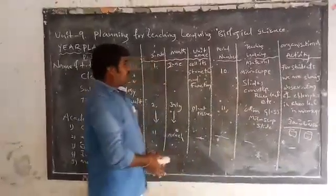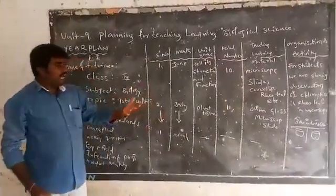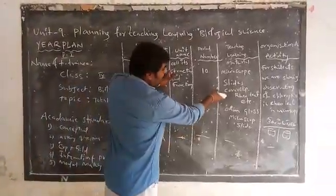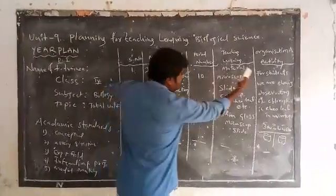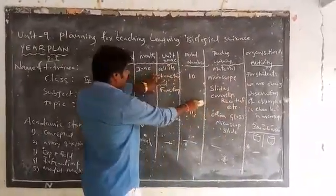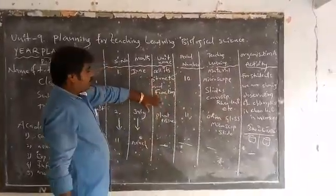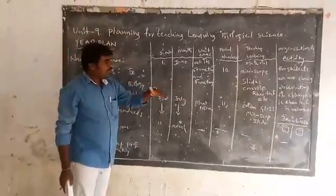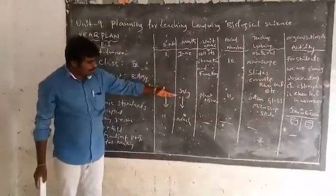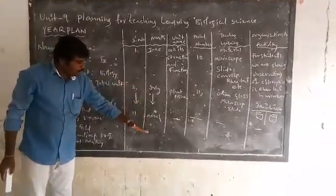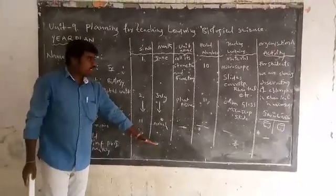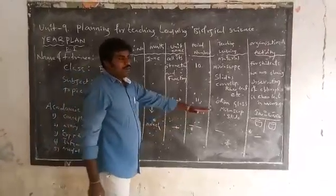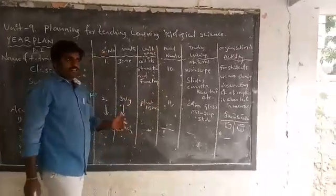In this way, it is easy for a teacher who has the necessary skills to continue planning. The year plan continues through months like August, September, and March, covering all units across the academic year.